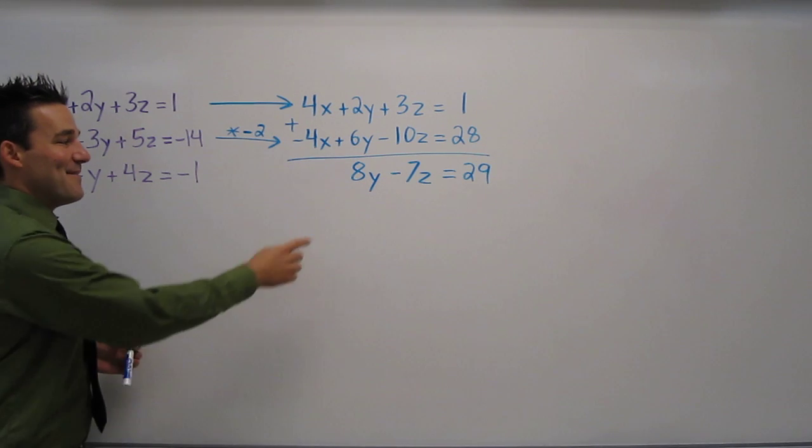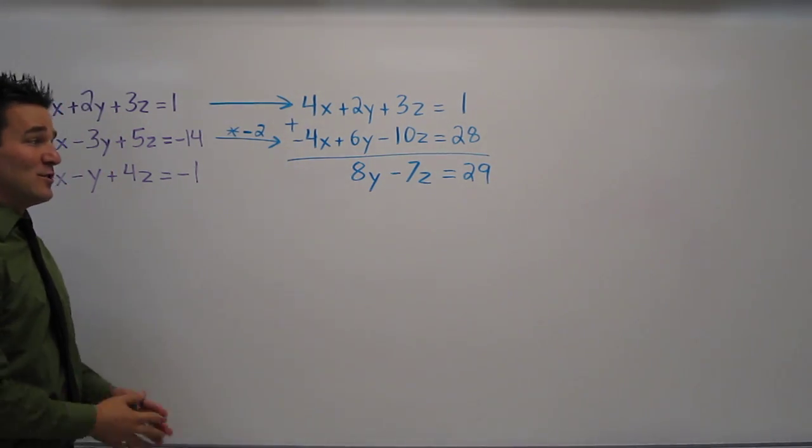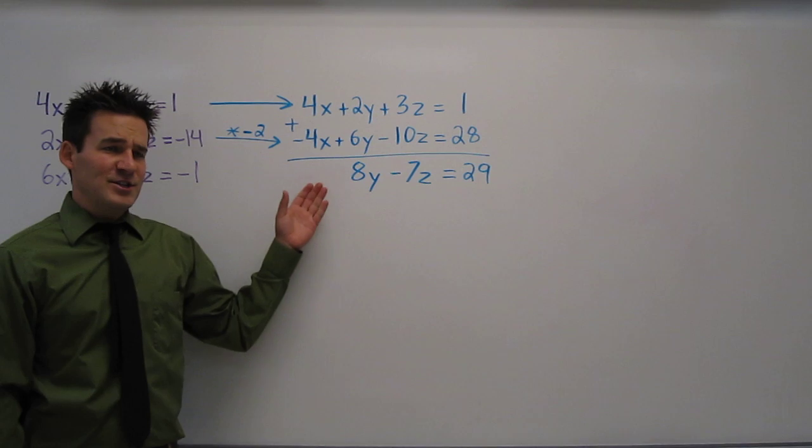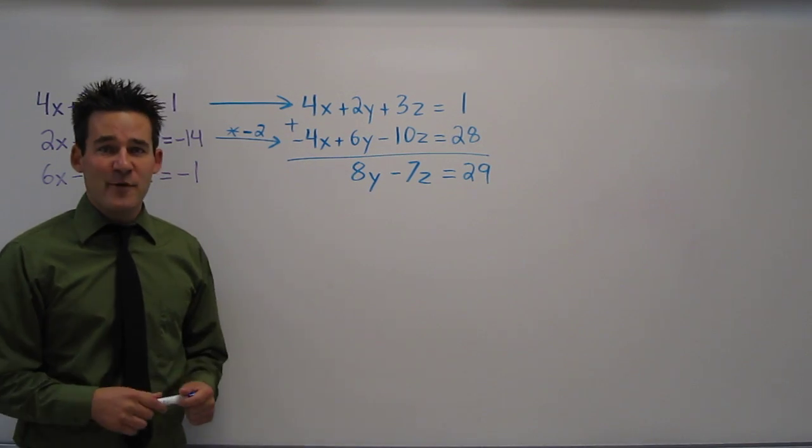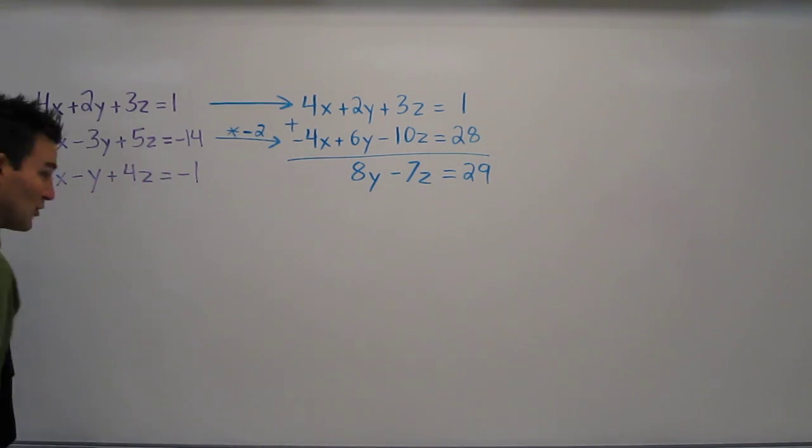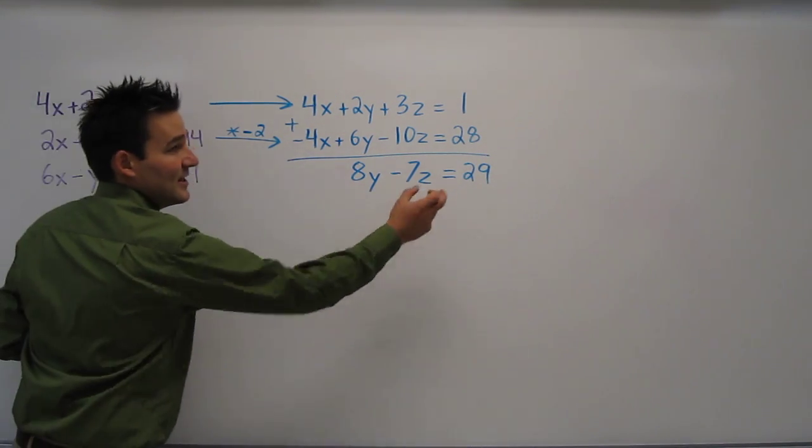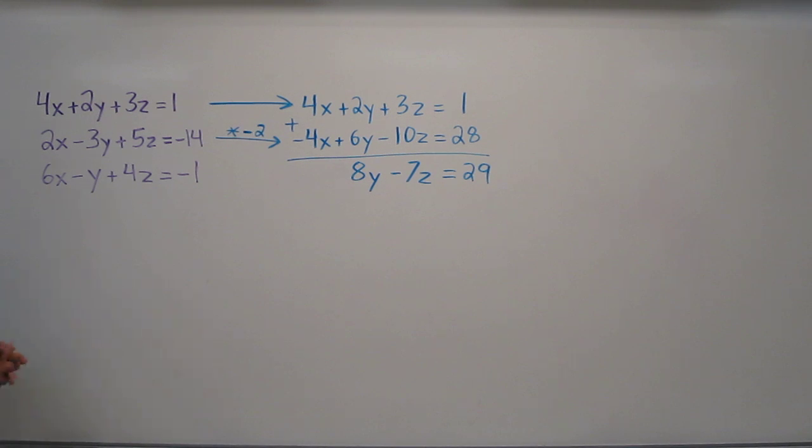Now this is great. I now have an equation with just two variables in it. But one equation with two unknowns is unsolvable. So we need to find another one. Now I used these first two equations to produce this equation. I need to use two different equations to produce a separate equation that doesn't have x in it. So let's use the bottom two.